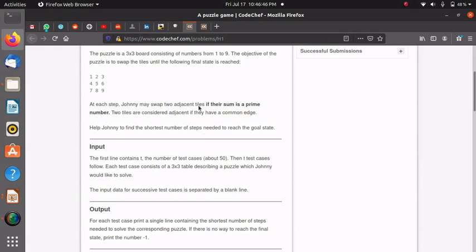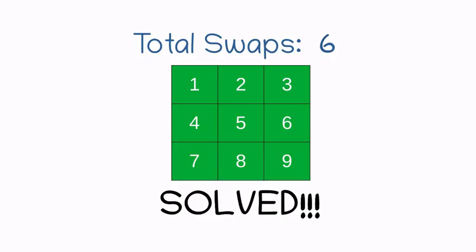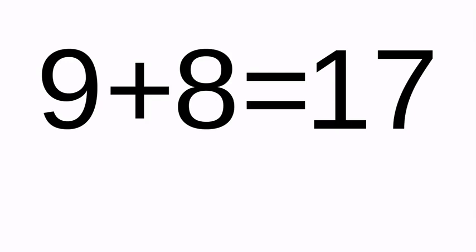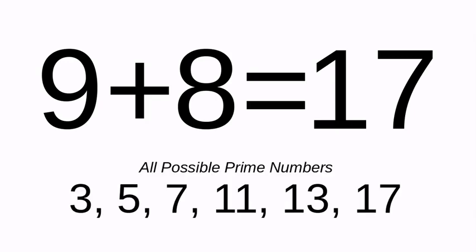So how are we going to solve this problem? Let's do some brainstorming. From the question, we know that we can only swap two numbers if their sum is a prime number. We also know that the maximum prime number possible in this grid is 9 plus 8, that is 17. So there is absolutely no need to compute prime numbers because we already know all the prime numbers possible.